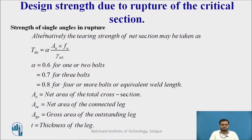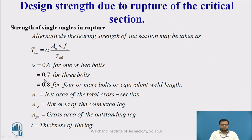There is also a preliminary formula for designing the angle section to calculate rupture strength: TDN = α · AN · Fu / γM0, where α = 0.6 for 1 or 2 bolts, α = 0.7 for 3 bolts, and α = 0.8 for 4 or more bolts or equivalent weld length. Here AN is the net area of the total cross section, ANC is the connected leg area, AG0 is the outstanding leg area, and T is the thickness of the leg.